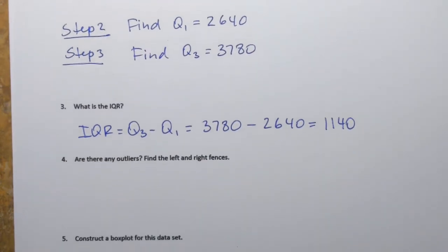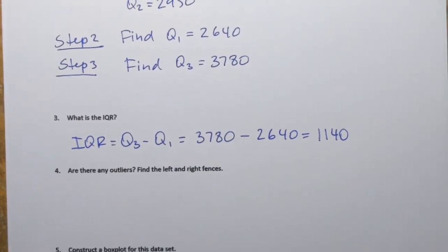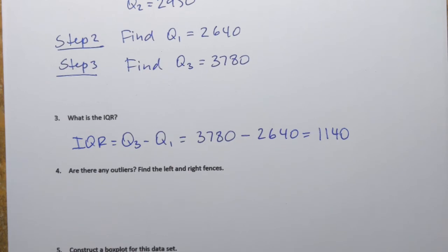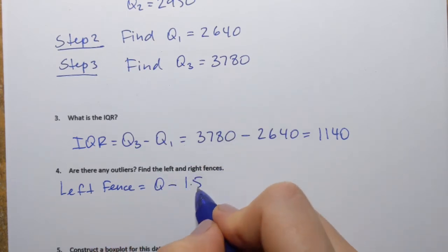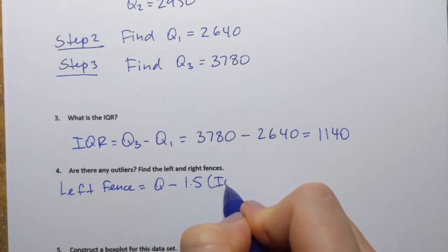And now here's that question about outliers. Are there any outliers? For them, we need to find left and right fences. So remember to find the left fence, we start at Q1 and subtract 1.5, it's always that number in the formula, times IQR.